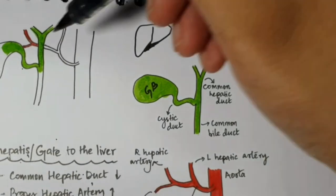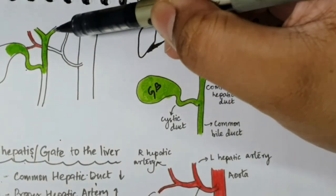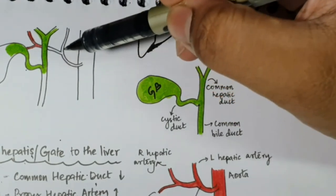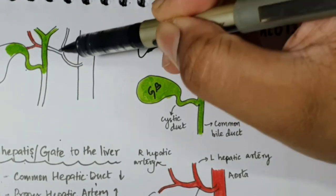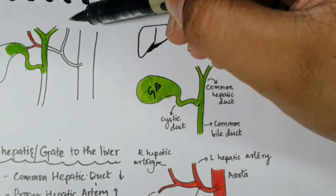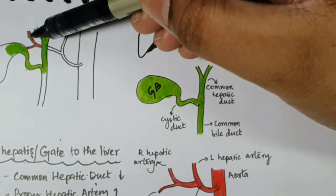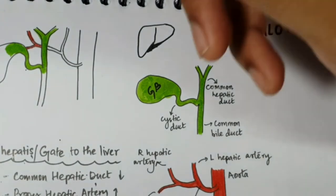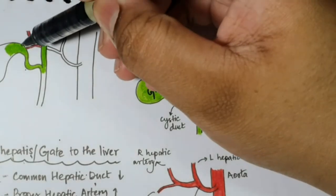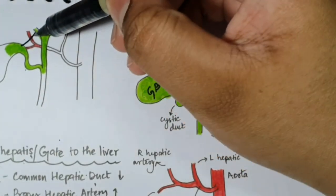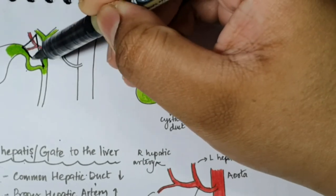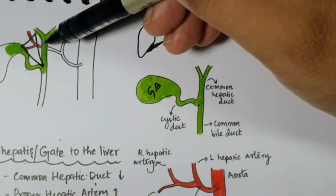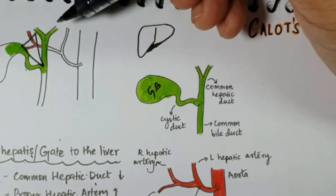Here we have the common hepatic duct and the cystic duct. We have the proper hepatic artery, from which there's a left hepatic artery and a right hepatic artery. The right hepatic artery gives off the cystic artery. This area forms the Calot's triangle, also called the cystohepatic triangle.